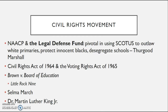One way the NAACP was instrumental as an interest group was by coordinating with the Legal Defense Fund. This was pivotal because they used the courts to make headway. Remember, when interest groups aren't succeeding in other areas such as Congress, they resort to the courts as a last resort. They were instrumental in outlawing white primaries, protecting innocent Black Americans accused of crimes with no evidence, and eventually desegregating schools with the help of Thurgood Marshall, who would later serve on the Supreme Court.